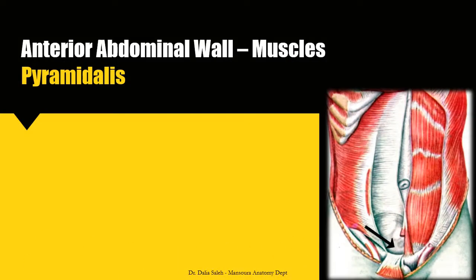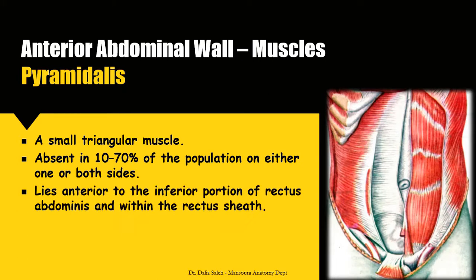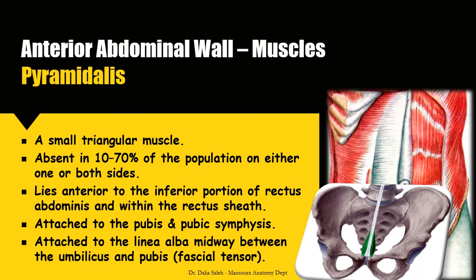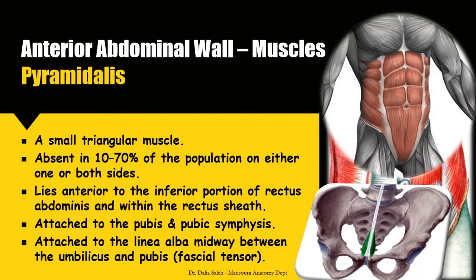Another small muscle present in the median region of the abdomen is the pyramidalis muscle — a small triangular muscle. It is absent in 10 to 70% of the population, on average about 20%, either on one side or both sides. It lies anterior to the inferior part of the rectus abdominis and also within the rectus sheath. It is attached to the pubis and pubic symphysis and inserts at the linea alba midway between the umbilicus and the pubis. It tenses the linea alba, acting like a fascial tensor. Together with the pectoralis major muscles, which send a fascial extension attached to the linea alba from above, they also tense the linea alba.